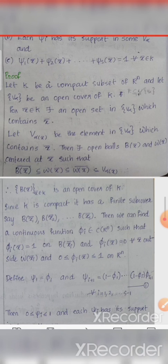Since K is compact it has a finite subcover, say B(x̄_1), B(x̄_2), ..., B(x̄_s). Compactness is the necessary and sufficient condition that every open cover of K has a finite subcover. Then we can find a continuous function phi_i ∈ C(R^n) such that phi_i(x̄) = 1 on B(x̄_i) and phi_i(x̄) = 0 for all x̄ outside W(x̄_i), and 0 ≤ phi_i(x̄) ≤ 1 on R^n.